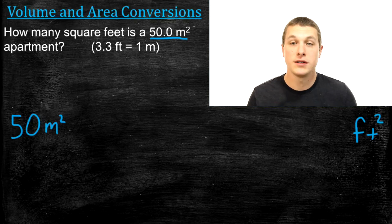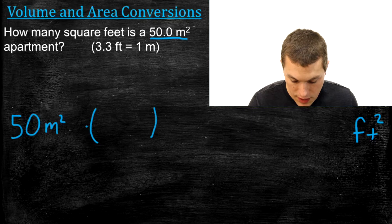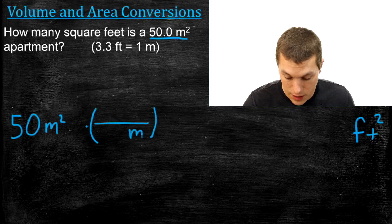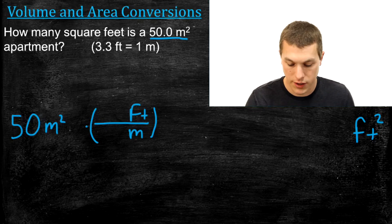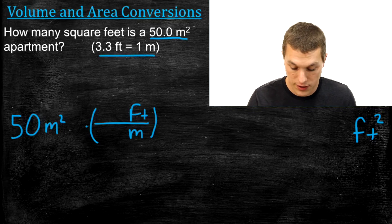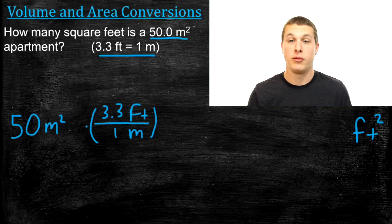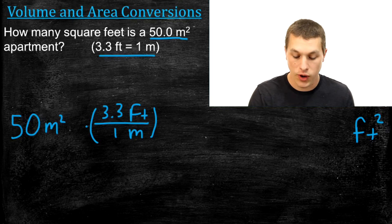We multiply by a conversion factor. We want to go from meters to feet, so we put meters on the bottom and feet up top. Our equality tells us that 3.3 feet equals one meter, so we plug that in. At this point a lot of people might say go ahead and multiply through and we'll be done, but that's a big mistake.